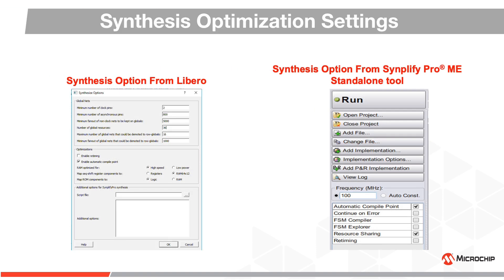Libro SOC design suite provides Synopsys Simplify Pro to generate optimized netlists. The Simplify Pro tool offers various options to optimize netlists for Microsemi FPGAs. Libro SOC provides a GUI to conveniently modify common synthesis constraints without the need to open the synthesis tool. These include global nets.